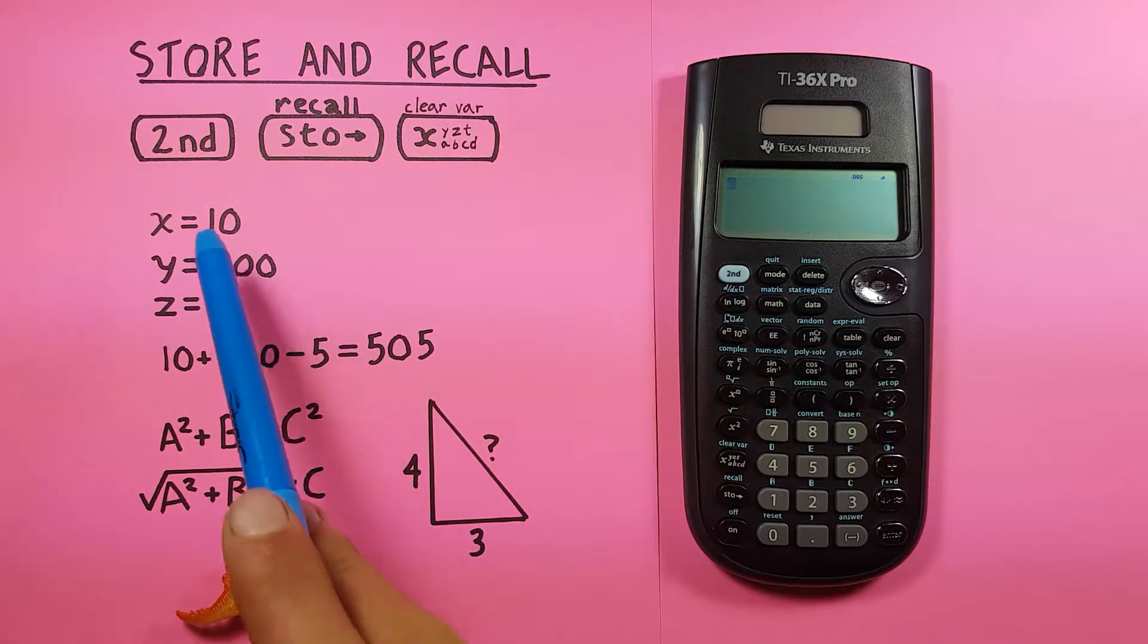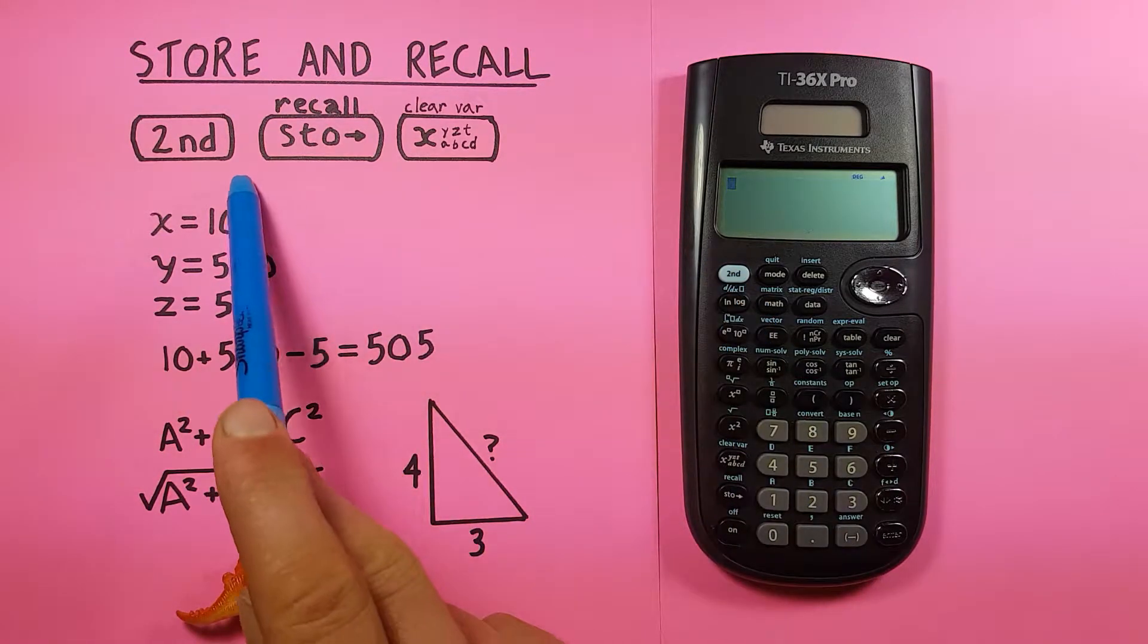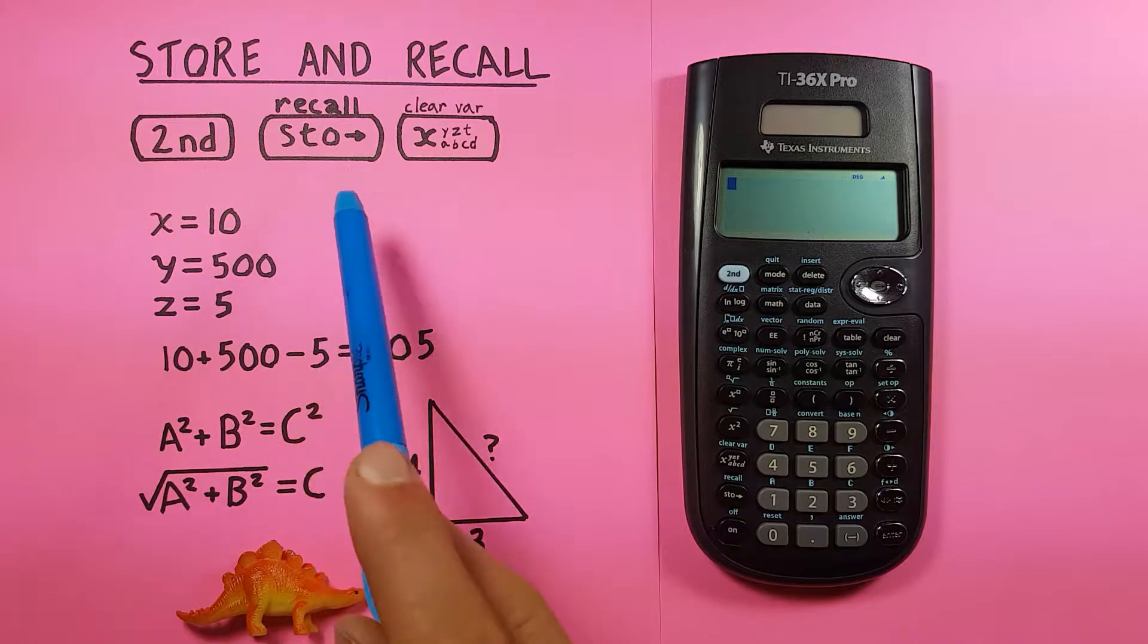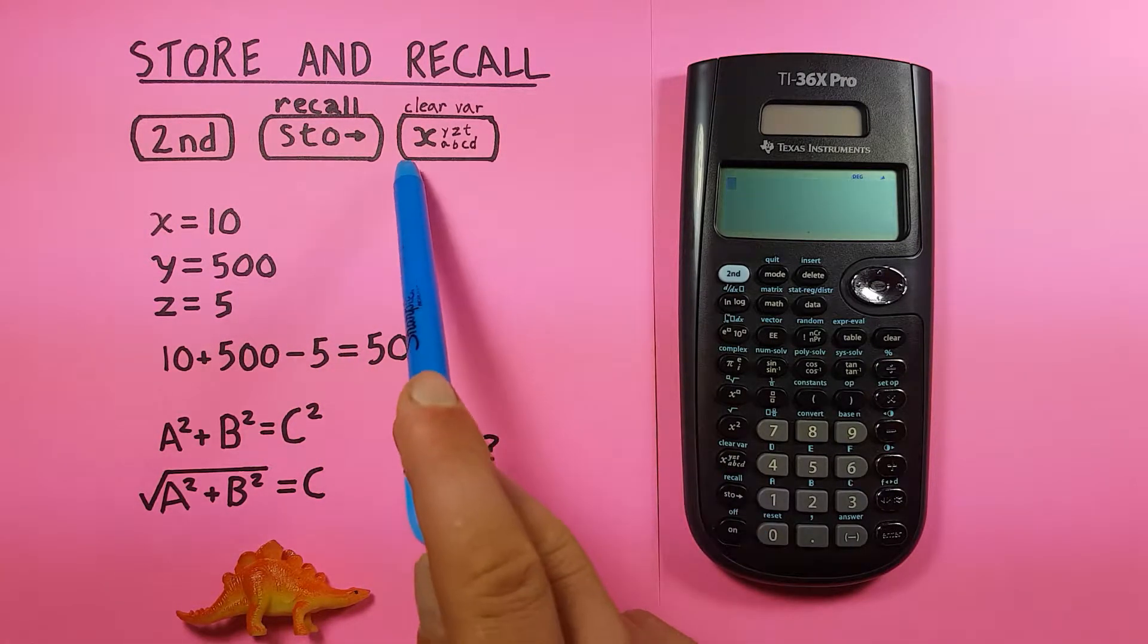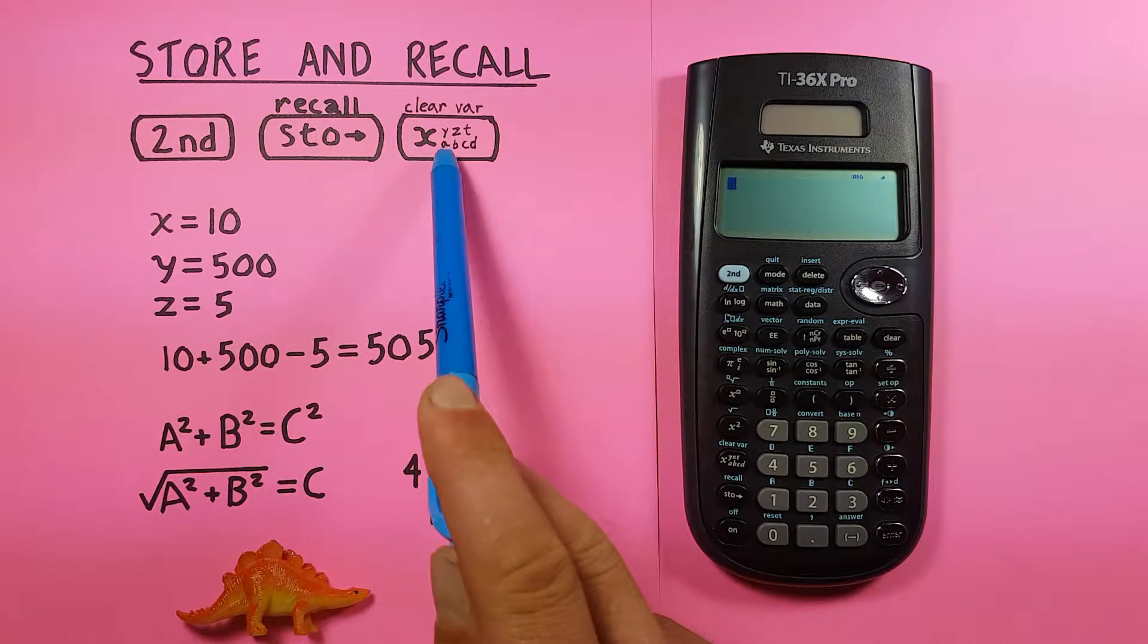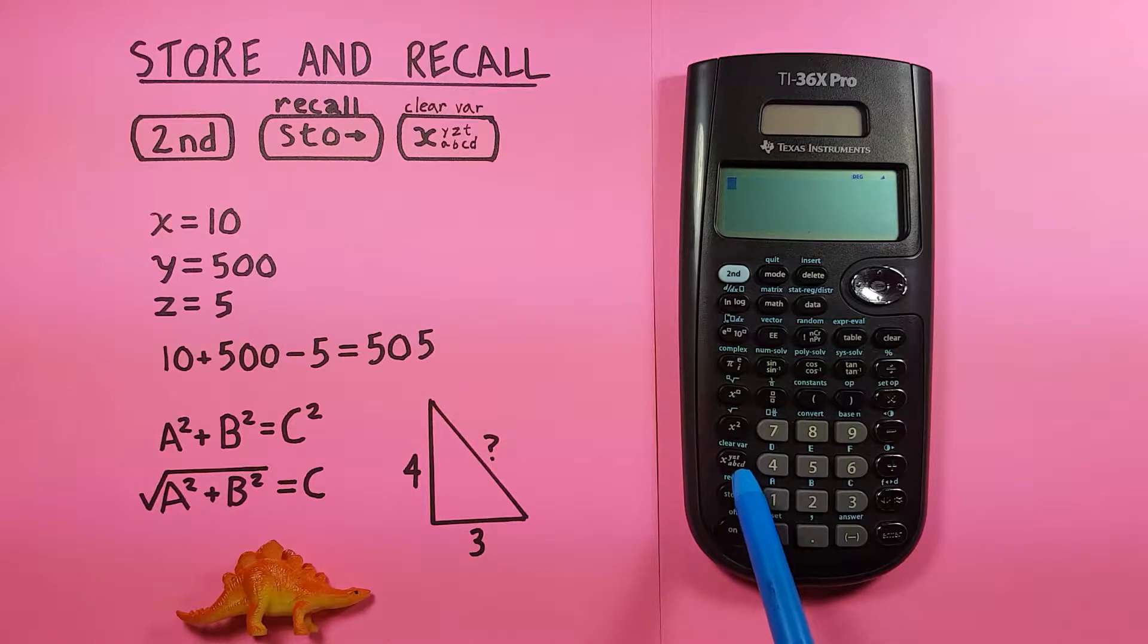To do this we'll be using the second function key, looks like this, located here. The store and recall key that looks like this, located down here beside the 1, and the XYZTABCD key that looks like this and is located here above the store key.